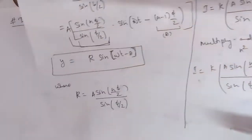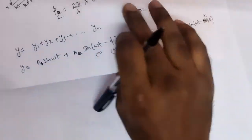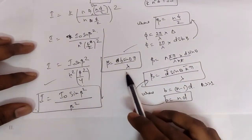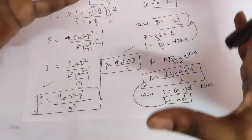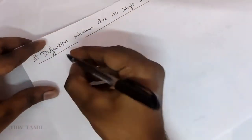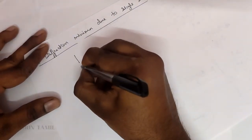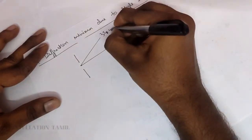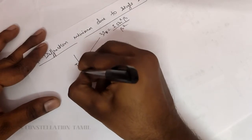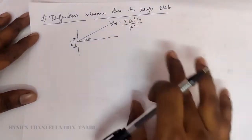So the final result we use is: I equals I₀ times sine beta squared divided by beta squared, where beta equals B sine theta times pi divided by lambda. This is the intensity relation — the intensity at a particular point depends on the angle theta and the slit width B.